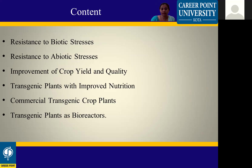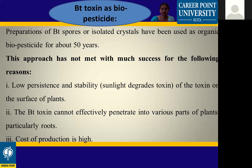Resistance to biotic stress. Beta toxin as biopesticides — preparations of Bt spores and isolated crystal proteins have been used as organic biopesticides for about 50 years. However, this approach has not met with much success in some regions.